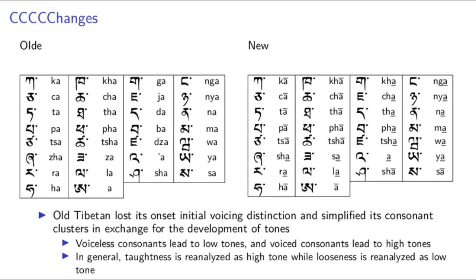This voice-brings-low tone, voiceless-brings-high tone distinction applies not only to the stops, but to the fricatives and liquids as well. What was voiced xa has changed to a low tone xa, and what was voiceless xa has changed to a high tone xa. Note that in modern Tibetan, non-aspirated low tone consonants are pronounced as voiced consonants, so that low tone xa is actually pronounced as voiced xa, but this is not phonemic, and is seen as much less important in modern Tibetan than the ideas of aspiration and tone.